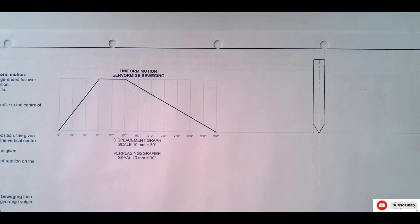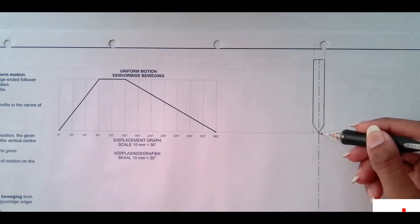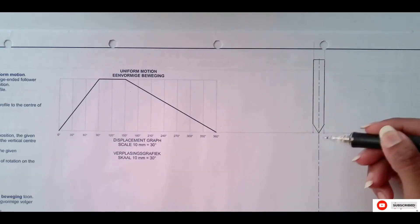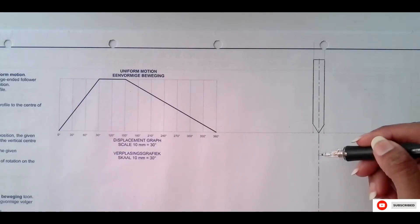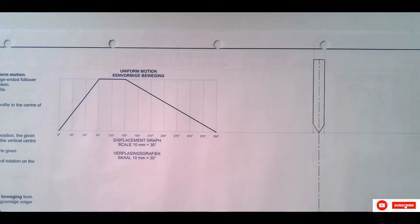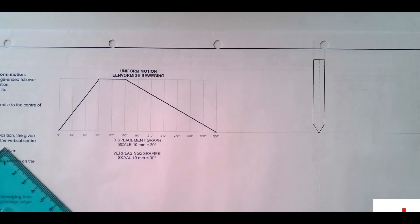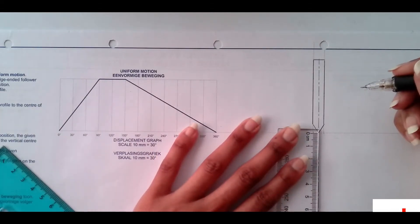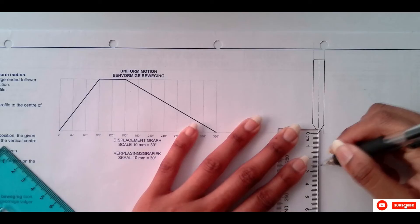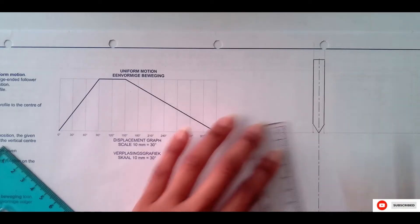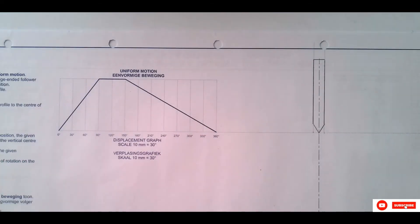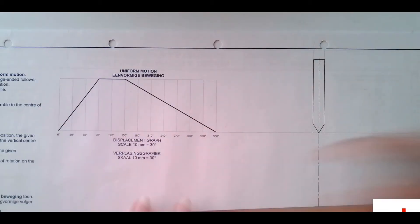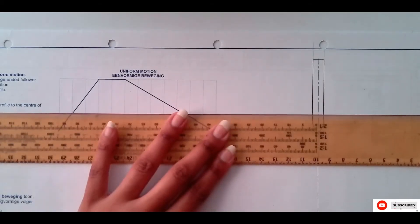From here, the distance between the follower and the center of the camshaft is 26mm. So I'm going to take my ruler and measure 26 going down. Once I mark where that 26 is, I'm going to extend that center line.